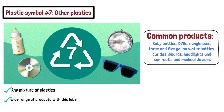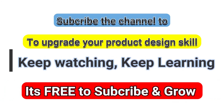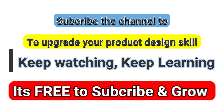In this video we have discussed all seven types of recycling symbols — numbers 1 through 7 — and their related materials, so you can identify what plastic a product is made from. If you liked this video, please like, share, and subscribe to the channel and hit the bell icon so you never miss an update from Mechanical Design Attack. Thank you, see you in the next video.